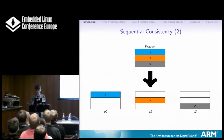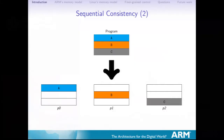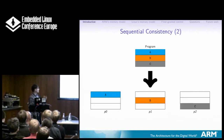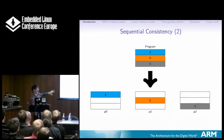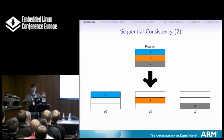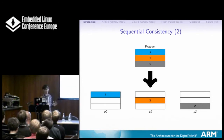I'll explain sequential consistency with a picture. You've got your program split into three chunks: A, B, and C — parts of your program that run consecutively in program order. For sequential consistency, you split that up across three processors: P0, P1, P2. They run in parallel, and it says there's an equivalent sequential execution of these instructions which gives the same result. So you get some arbitrary interleaving between processors, but within a single processor, say chunk B, you want those to execute in order. Sequential consistency gives you that guarantee.